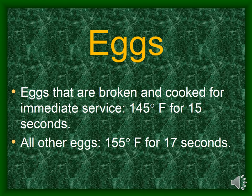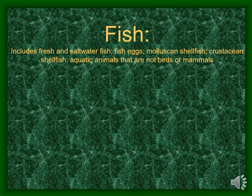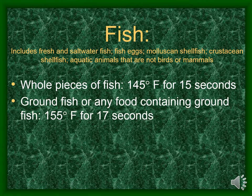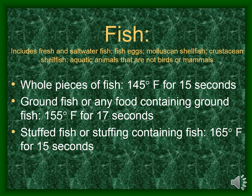The next set of temperatures are for raw fish. Fish includes all fresh or saltwater fish, any fish eggs, molluscan shellfish, crustacean shellfish, and any other aquatic animal that is not a bird or mammal. Whole pieces of fish must be cooked to at least 145 degrees Fahrenheit for at least 15 seconds. Ground fish, or any food containing ground fish, must be cooked to at least 155 degrees Fahrenheit for at least 17 seconds. Stuffed fish, or any stuffing containing fish, must be cooked to at least 165 degrees Fahrenheit for at least 15 seconds.